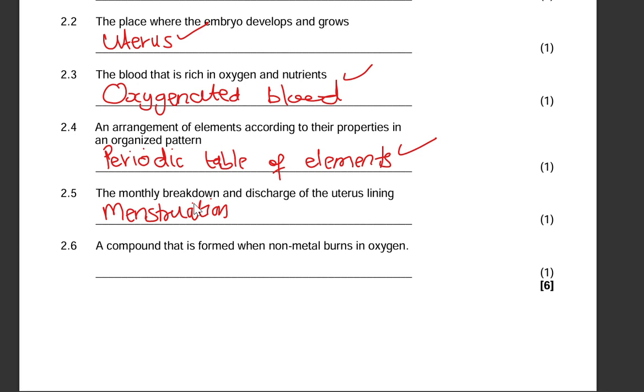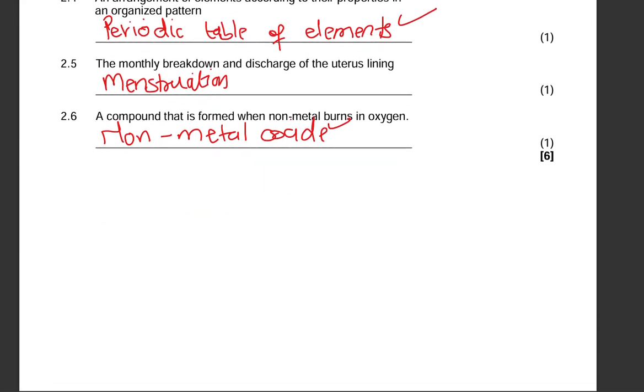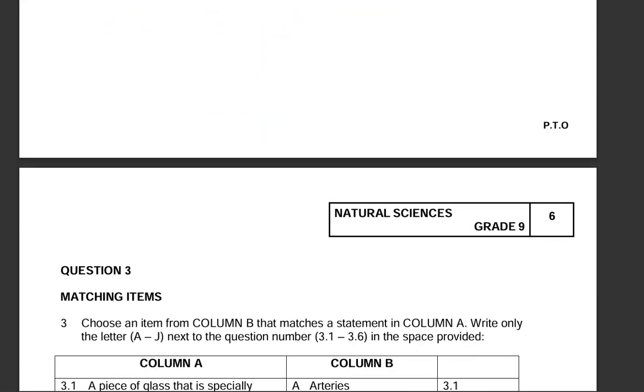2.5: the monthly breakdown and discharge of the uterus lining, that is menstruation, not period and don't write blood. The monthly breakdown and discharge of the uterus lining is menstruation. 2.6: a compound that is formed when non-metal burns in oxygen. We know that compound will be a non-metal oxide.